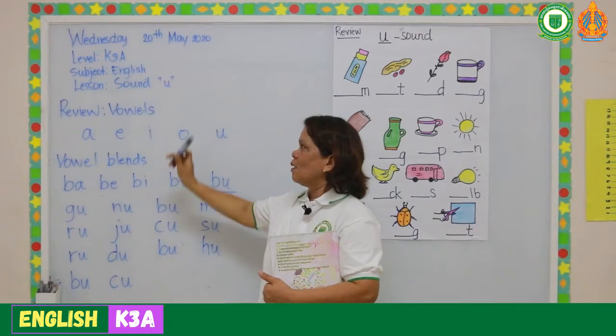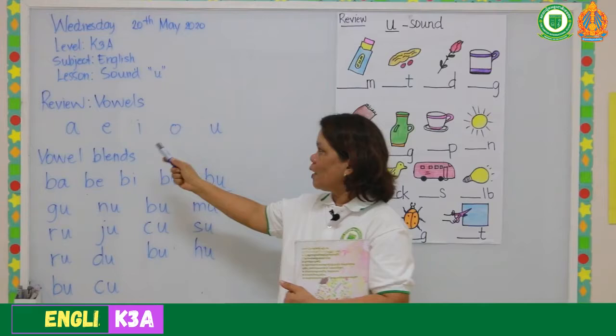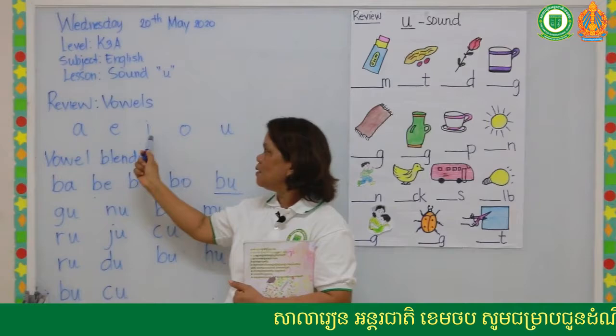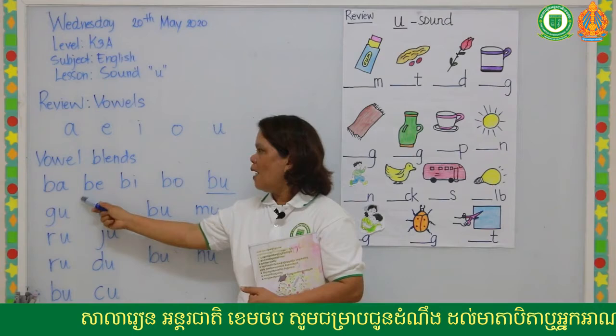For our review, we're going to review vowels. Okay, so listen very well. A, E, I, O. Again: A, E, I, O. So these are the vowels.